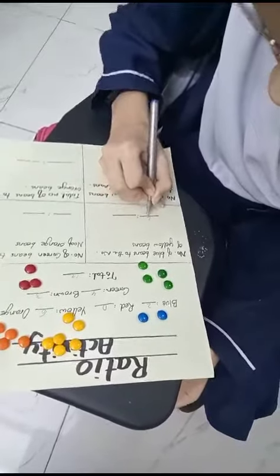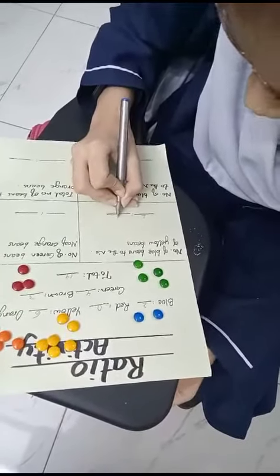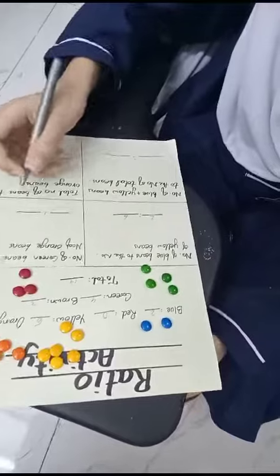Then, what is the next question? Number of blue beans to the number of yellow beans. How many are blue? Two. Right, two. And how many are yellow? Six. Six. So, two ratio six will be the answer.